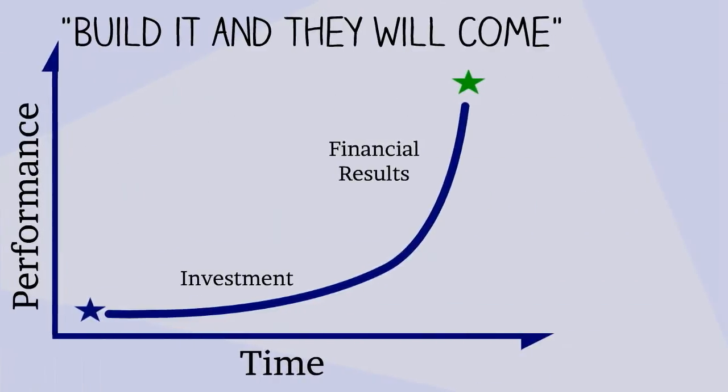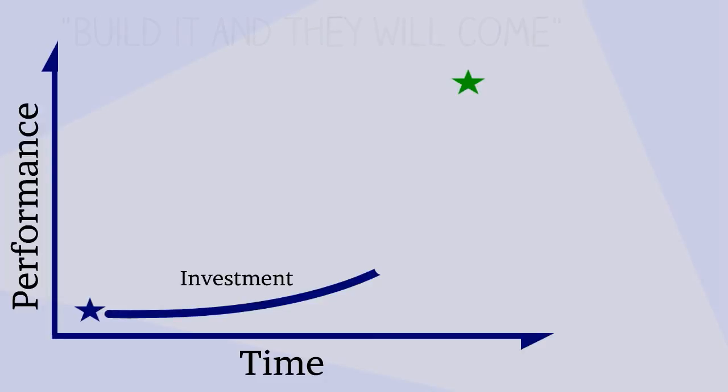There are fundamental flaws to the build it and they will come approach. First, most of these transformations fail in achieving their goals. In fact, a recent Harvard Business School study showed that the failure rate may be as high as 97%.